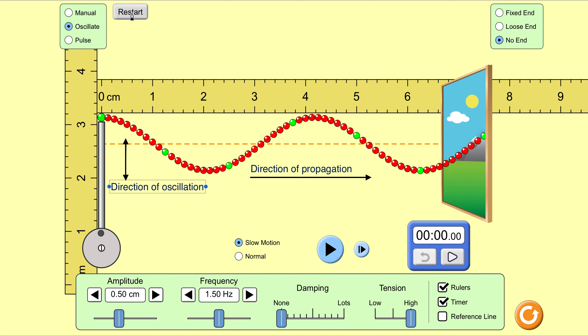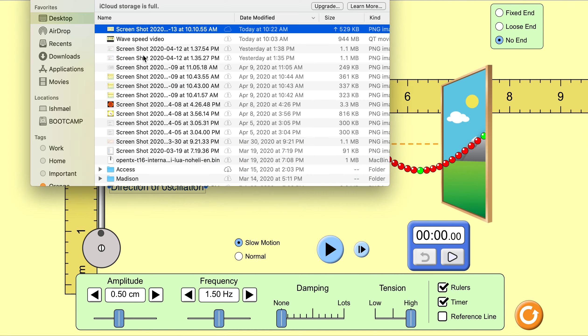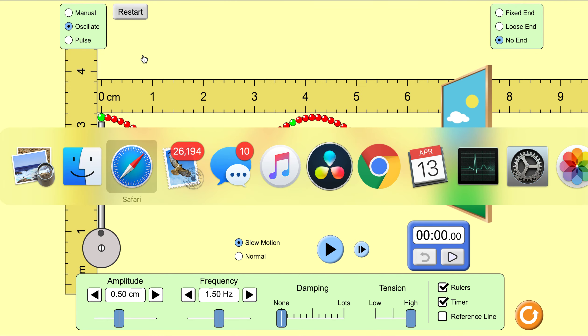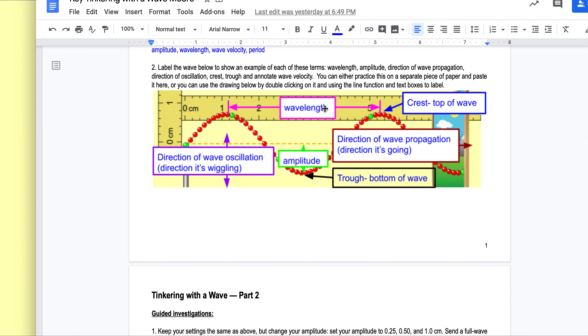What was another term we used? We used wavelength, amplitude, crest, trough, direction of oscillation, direction of wave propagation.